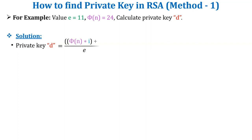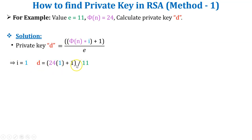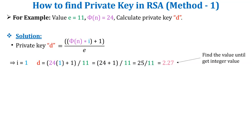The equation for value d is: d = (phi(n) × i + 1) / e. Here phi of n is equal to 24 and e is equal to 11. For the first iteration, i equals 1: d = (24 × 1 + 1) / 11 = 25 / 11 = 2.27. Since this is not an integer, we continue. Find value d until we get an integer value. For the next iteration, i equals 2.